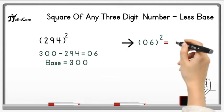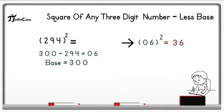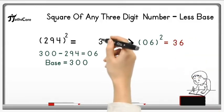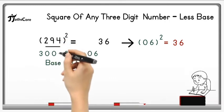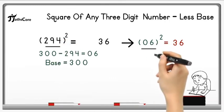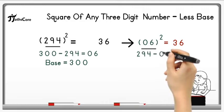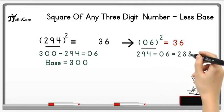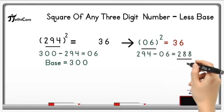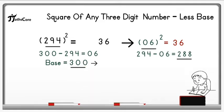Now find out square of 6. 6 square is equal to 36 and write down this 36 in a product. After that take whole number 294 as it is and subtract 6 from it. So 294 minus 6 is equal to 288. Now multiply this 288 with base number which is 300.